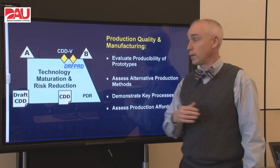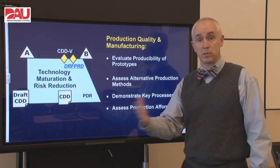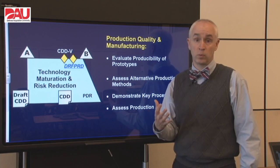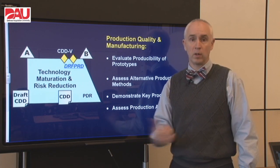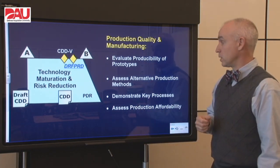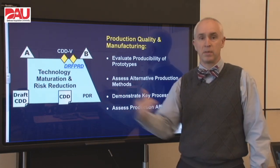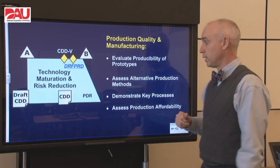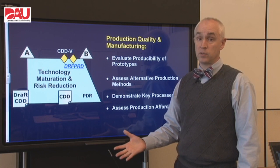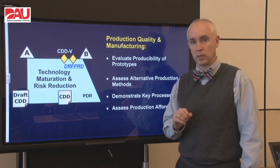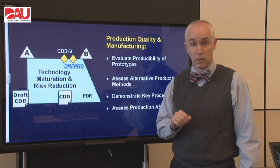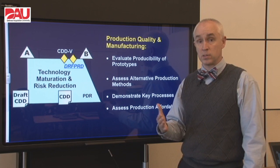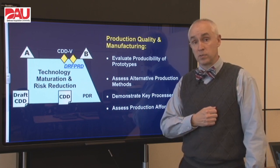Production quality and manufacturing also has quite a bit to do. We want to evaluate each of these prototypes — whether system level or component level — for manufacturability. What are the materials we're using? What processes will we have to use? Are there long lead items involved? We also want to assess alternative production methods — if we see a problem, maybe there are other ways to do it better, and some design-for-producibility work we can influence in this phase. We want to demonstrate any key manufacturing processes that are identified, and we also want to make sure that the production processes going forward and the actual production cost of the systems are going to be affordable.